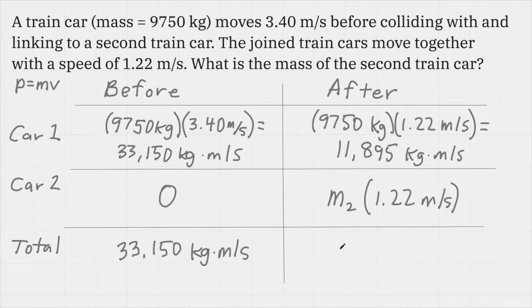When I total up my after column, I know the momentum of car 1. That was the 11,895 kilogram meters per second. In addition to that, I have mass 2 moving at 1.22 meters per second. And the key here is we're going to assume momentum is conserved. So the total momentum before the collision and the total momentum after the collision should be equal.